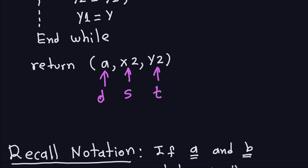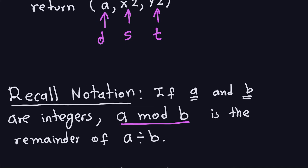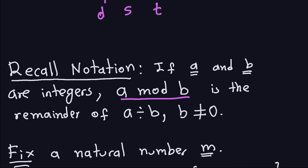This new topic is also very important for asymmetric cryptography. Let me recall the notation: A mod B is the remainder of A divided by B, assuming B is not zero. We used this notation before in class. Now I'm going to talk about a special set that also appears a lot in asymmetric cryptography, which is called a ring. We're going to talk about very particular rings made out of just numbers.